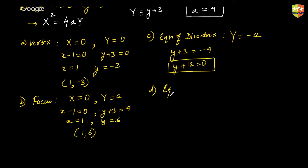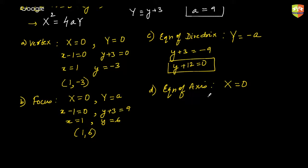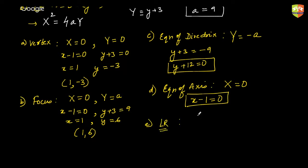The equation of the axis: for x² = 4ay, the axis is x equal to 0, so it becomes x minus 1 equal to 0 as the equation of the axis. And finally, the length of the latus rectum is 4a, which is 36 units.